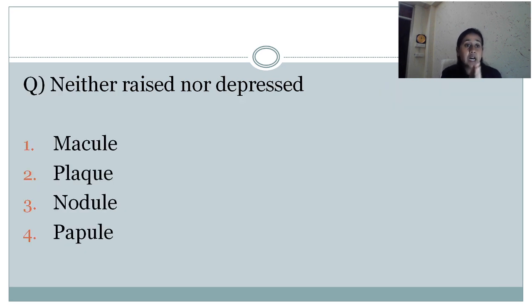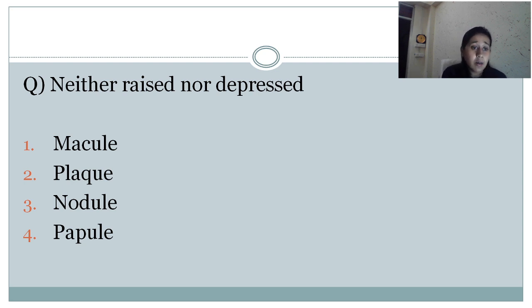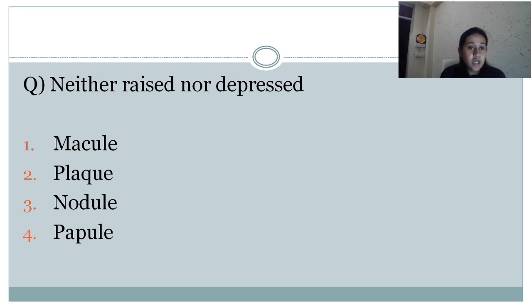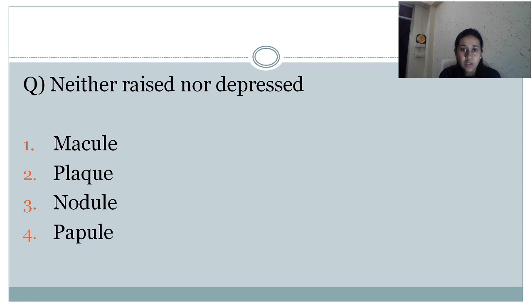Here are a few examples of how these questions can come in your exam. The first question is: a lesion that is neither raised nor depressed — what is the answer? It is a macule. The answer is macule because it is neither raised nor depressed, meaning it is a flat lesion. If it is less than 0.5 cm then it is a macule, and if it is more than 0.5 cm then it is a patch. The second question: a flat discoloration on the skin which is 1 cm in size — the answer is patch, because the size is 1 cm, which is more than 0.5 cm.